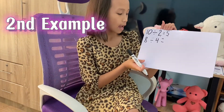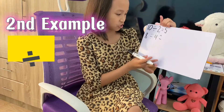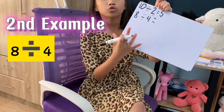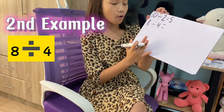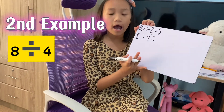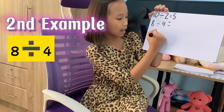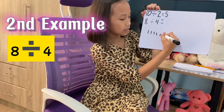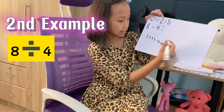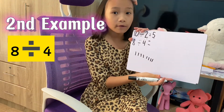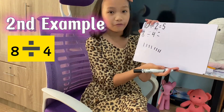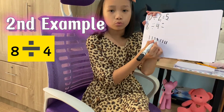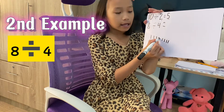So kids, let's have our second example, which is 8 divided by 4. We're going to draw 8 lines: one, two, three, four, five, six, seven, eight. Now what we're going to do is count them by four: one, two, three, four.